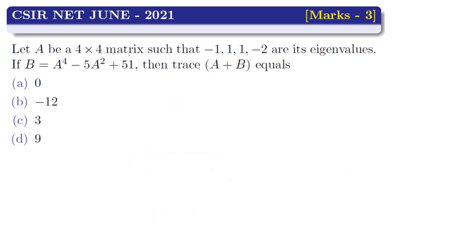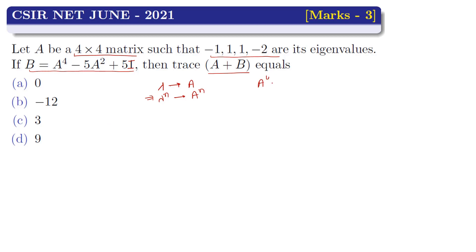Next question: let A be a 4×4 matrix with eigenvalues -1, 1, 1, -2. If B = A⁴ - 5A² + 5I (where I is the identity matrix), then what is trace(A + B)? Options: A) 0, B) -12, C) 3, D) 9. Since A has eigenvalues -1, 1, 1, -2, the eigenvalues of A⁴ are the fourth powers: (-1)⁴ = 1, 1⁴ = 1, 1⁴ = 1, (-2)⁴ = 16.